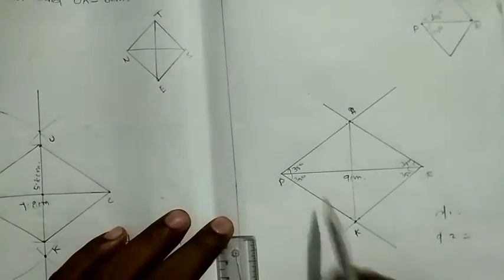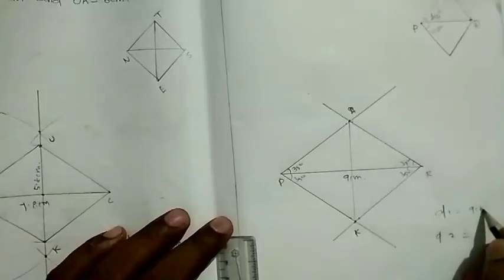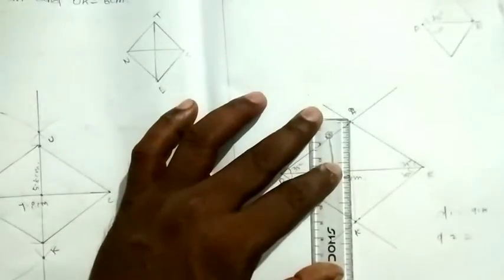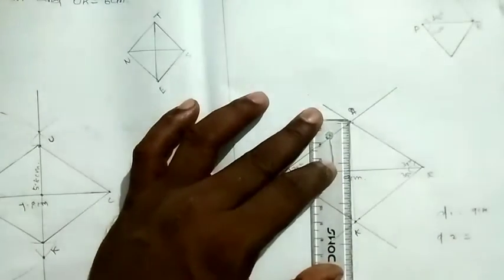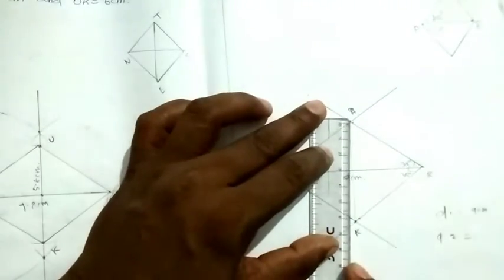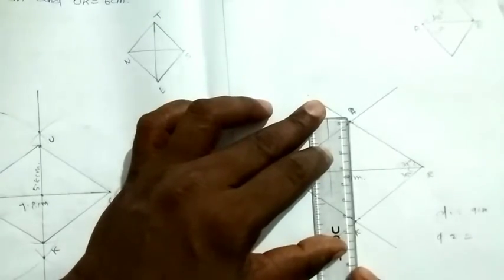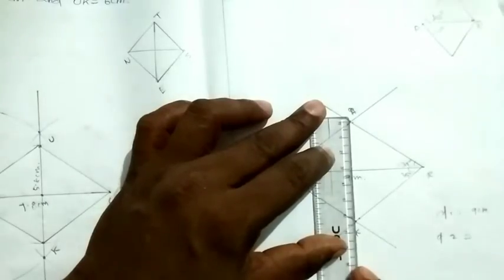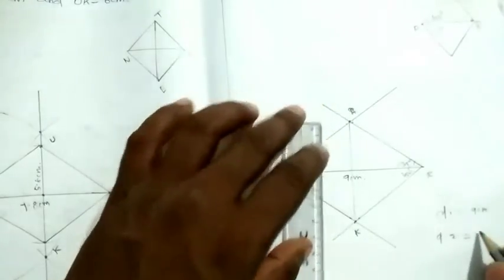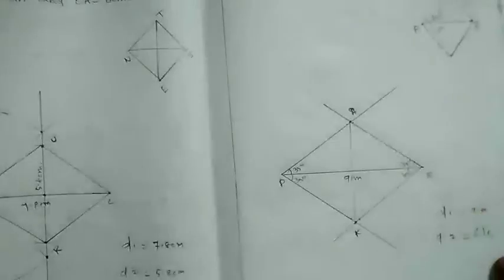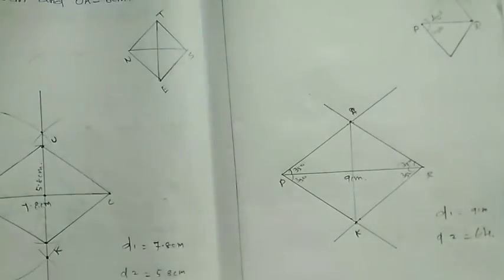So, diagonal 1 is already 9 cm. That's the diagonal 2. Measure. So, 6.4. So, diagonal 1, diagonal 2, formula for the area of the rhombus.